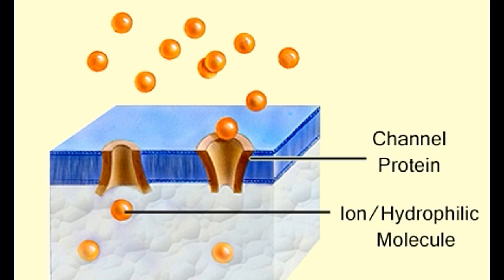Antiport, co-transport of molecules or ions in the opposite direction of the biological membrane. For example, Na+/Ca2+ exchanger. Here, Na+ ions move down their concentration gradients, and this provides energy for the movement of Ca2+ against its concentration gradient. 3 Na+ ions are transported inside the cell, and 1 Ca2+ ion is pumped out of the cell.